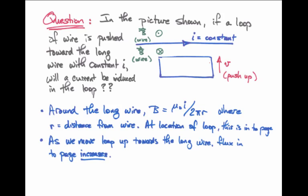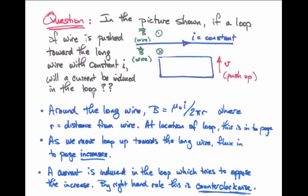Notice that as we move the loop of wire closer and closer to the long wire, the magnetic field is increasing, and that's because the magnetic field depends like 1 over the distance from the wire. So as the distance gets smaller, the magnitude of the magnetic field increases. This tends to increase the flux pointing into the page that's going through the loop. As a result, Faraday's Law of Induction tries to oppose this. It tries to create a flux out of the page coming out of the loop.